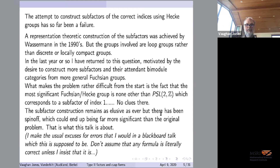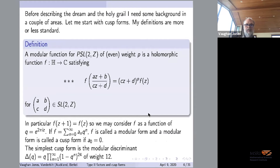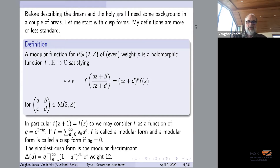I want to describe this dream that would actually be more significant than the original problem — what I'm going to call the Holy Grail. I need some background in a couple of areas. I'll start with cusp forms, which is possibly less familiar to this particular audience. My definitions are more or less standard.